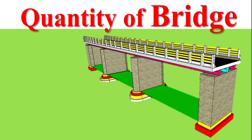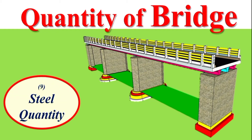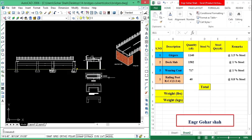Assalamualaikum dear students, I hope you will be fine. In this video I am going to continue my previous topic, that was quantity average. As you can see, we have a bridge here. In our previous lectures, we calculated the quantity for this bridge. Today in this lecture, we will calculate the total quantity of steel work for this bridge. Let's go towards the drawing of this bridge to see how much steel is used in the different components.